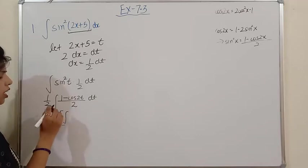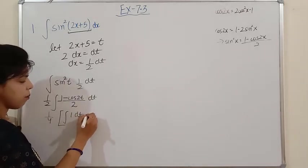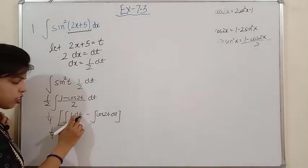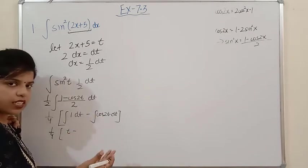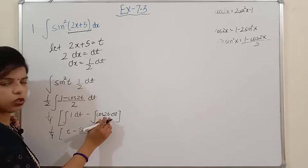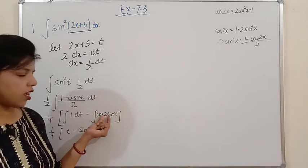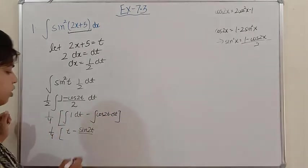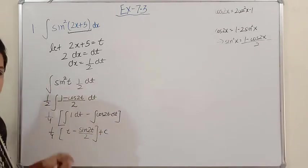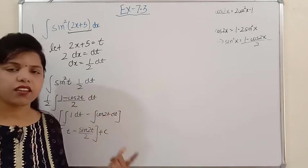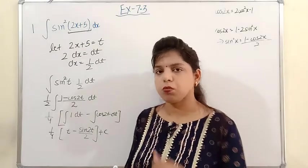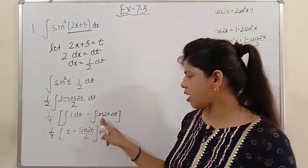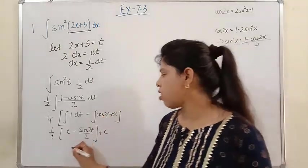2 is a constant, so take it outside. We get (1/4) outside, and separate the integrations: ∫1 dt minus ∫cos2t dt. The integration of 1 with respect to t gives t, and the integration of cos2t gives sin2t divided by 2 — because the coefficient of t (which is 2) comes in the denominator, since differentiation brings it to the numerator and integration is the reverse process.